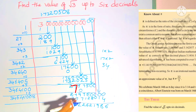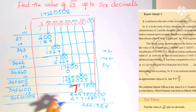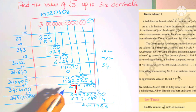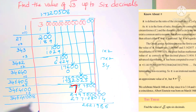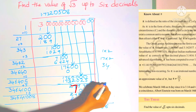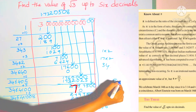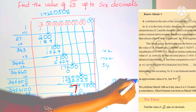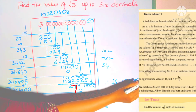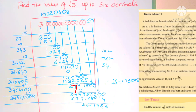So like this, we can find out the value of root 3 up to 6 decimal places. Root 3 is equal to 1.7320508. I think you understand this problem. Please like this video, share it with your friends, and please subscribe to my channel. Thank you for watching.